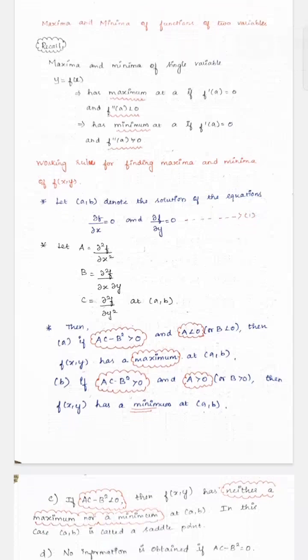Next, after finding the critical point (a, b), we find the values of the second-order partial derivatives. We compute ∂²f/∂x² at (a, b) and note that value as 'A'. Then we find ∂²f/∂x∂y at (a, b) and denote that as 'B'. Next, we find ∂²f/∂y² at (a, b) and denote that value as 'C'.